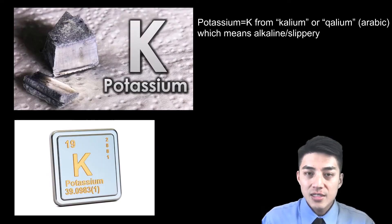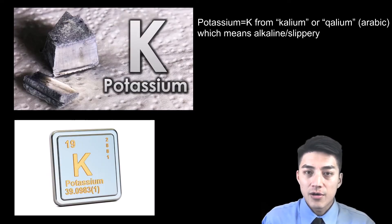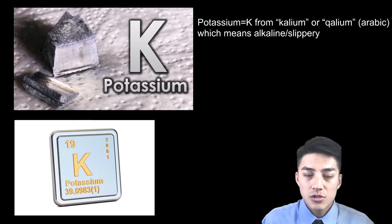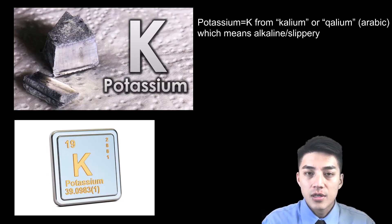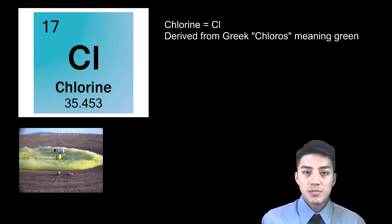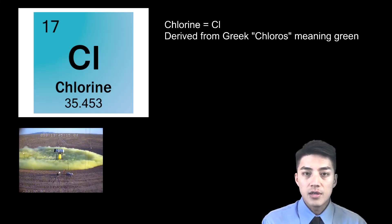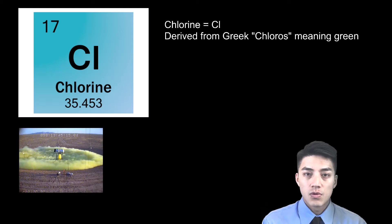The symbol for potassium is K, which is derived from the Arabic kalium, which translates to alkaline or slippery. Chlorine has the symbol Cl, which is derived from the Greek root chloros, meaning green. Chlorine is a green gas that was used in World War I as a chemical weapon.